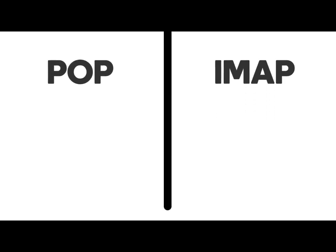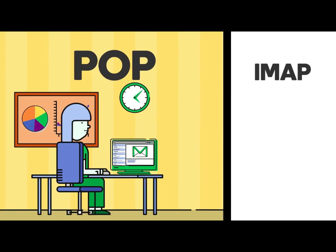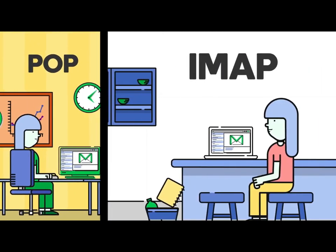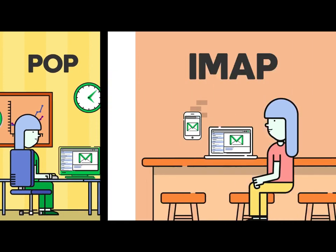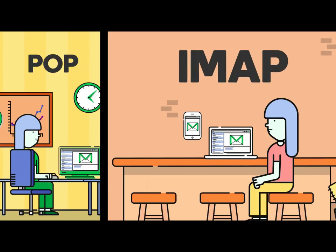To decide which will work best for you, think about how you like to check your email. If you're someone who always checks their email from one location or on only one device, POP will work. However, if you're someone who checks your email from your laptop just as frequently as your mobile, and you need to be able to access it no matter where you are, then IMAP is a better choice.